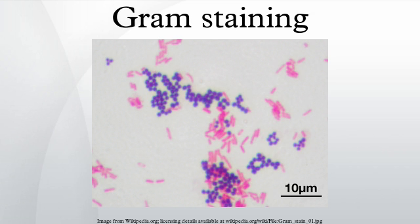Gram positive bacteria generally have a single membrane surrounded by a thick peptidoglycan. This rule is followed by two phyla: Firmicutes and the Actinobacteria. In contrast, members of the Chloroflexi are monoderms but possess a thin or absent peptidoglycan and can stain negative, positive, or indeterminate. Members of the Deinococcus-Thermus group stain positive but are diderms with a thick peptidoglycan. Historically, the Gram positive forms made up the phylum Firmicutes, a name now used for the largest group.